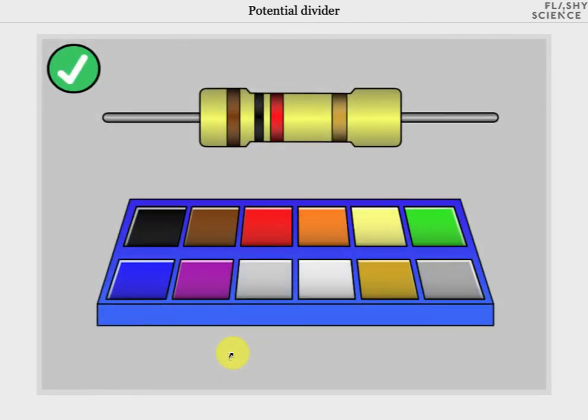We can now choose the band we wish to change so that it starts flashing and then select from the available colors in the palette so that the resistor becomes that color. Band 1 is now red.